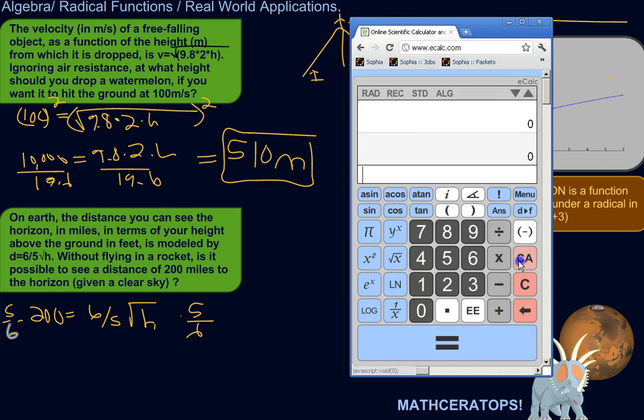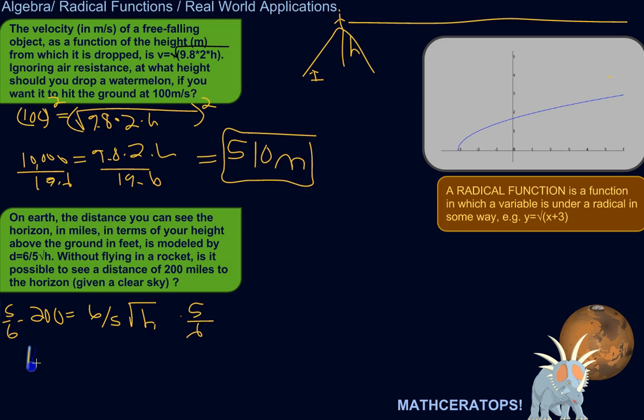So, let's just do that on the calculator. So, here, 200 times 5 divided by 6. 166.6 repeating. Let's just say 166.7. Let's round it. It's equal to the square root of the height.